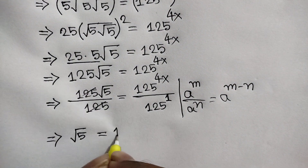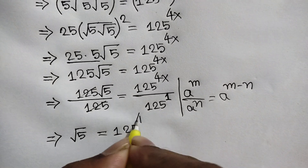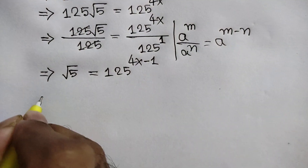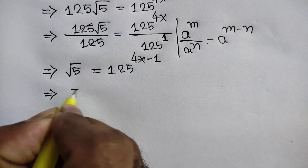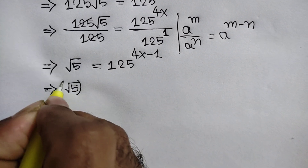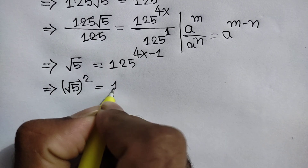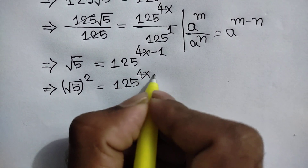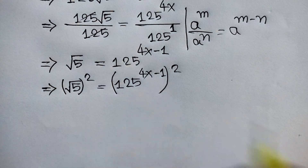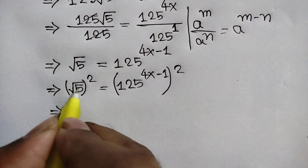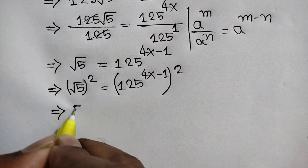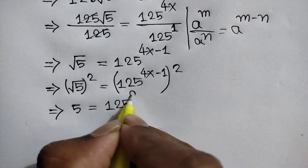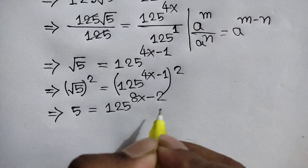Applying this rule, we will write: square root of 5 is equal to 125 to the power 4x minus 1. Again squaring both sides: square root of 5, whole to the power 2, is equal to 125 to the power 4x minus 1, whole squared. This square root cancels out the square, so it will be remaining 5 is equal to 125 to the power 8x minus 2.